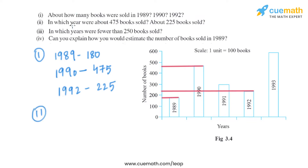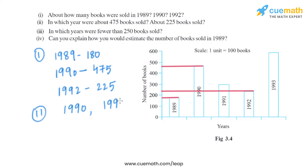The next part of the question asks in which year about 475 books were sold and about 225 books were sold. As we can see, in 1990 approximately 475 books were sold, and in 1992 approximately 225 books were sold.